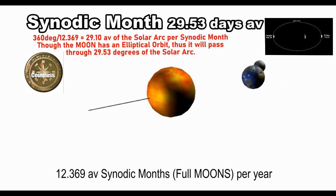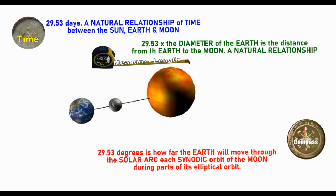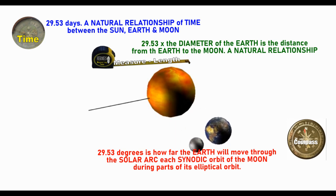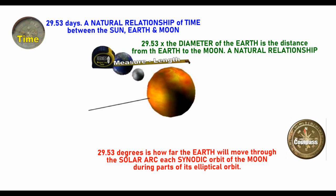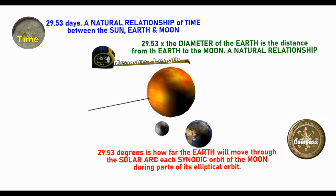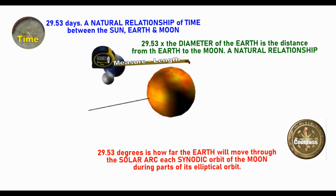29.53 days average means there are 12.369 average full moons per year, and the square root of 153 is 12.369. Because of the elliptical nature of the Moon's orbit around the Earth, the Earth will pass through 29.53 degrees of the solar arc during some of its synodic period. So we have 29.53 in time, 29.53 times the diameter of the Earth as the natural distance between Earth and Moon, and 29.53 degrees of the Sun–Earth–Moon synodic arc — all coming back to this lovely balance built into natural relationships.